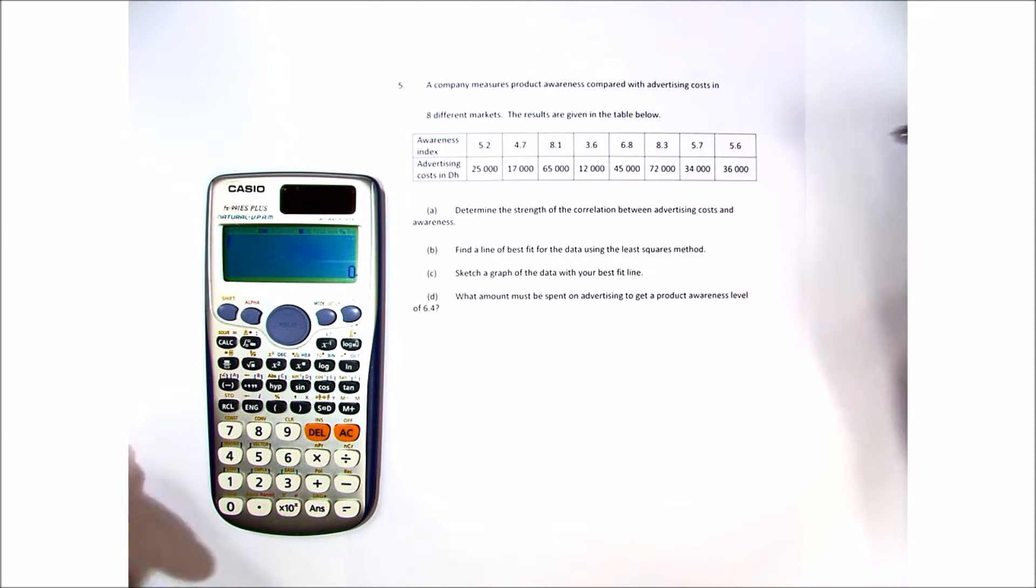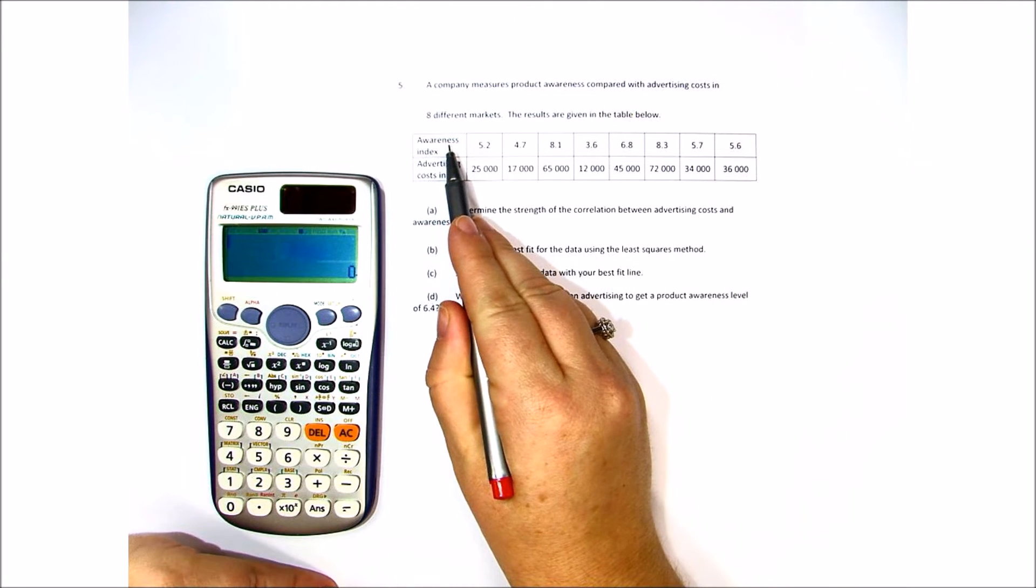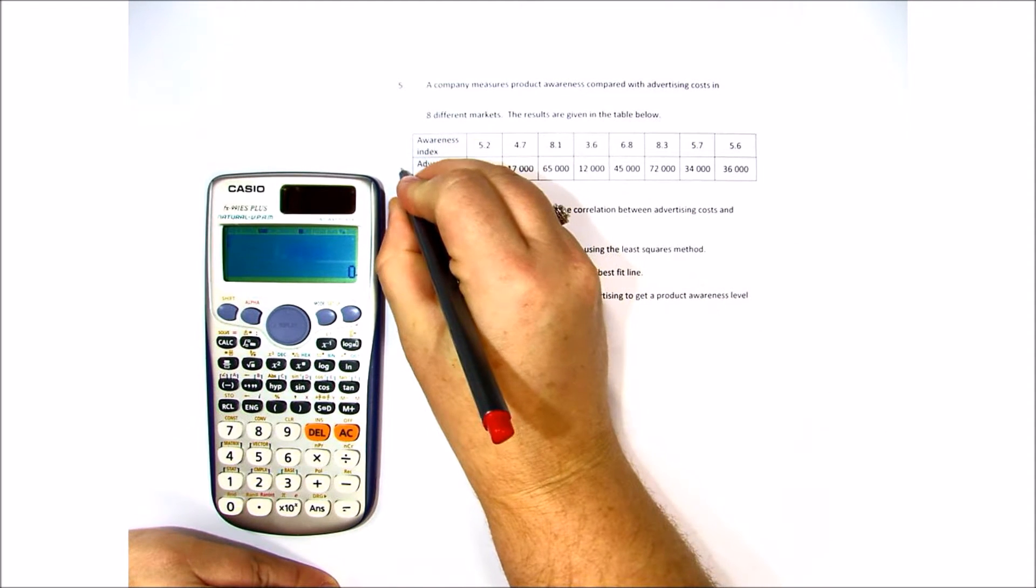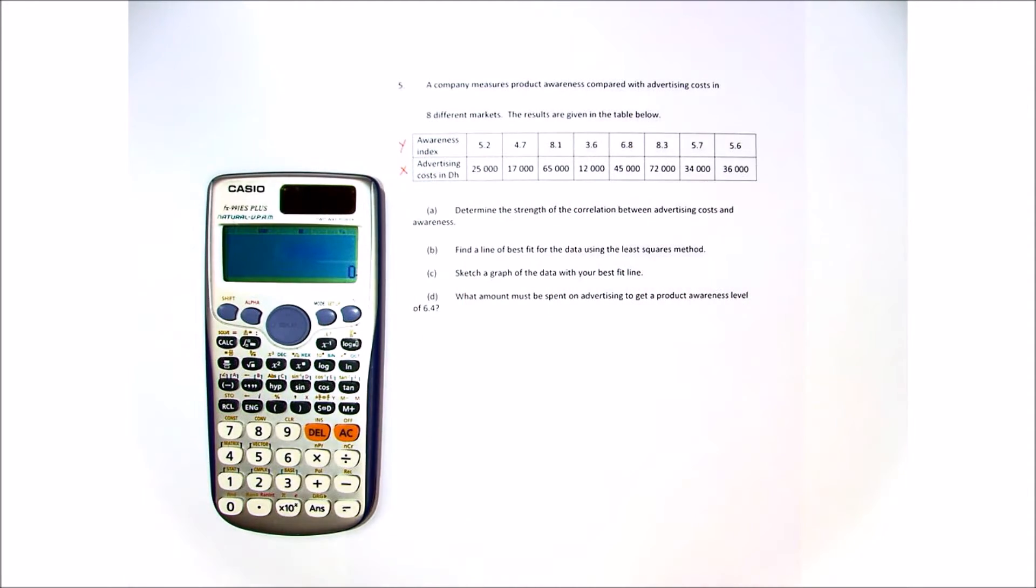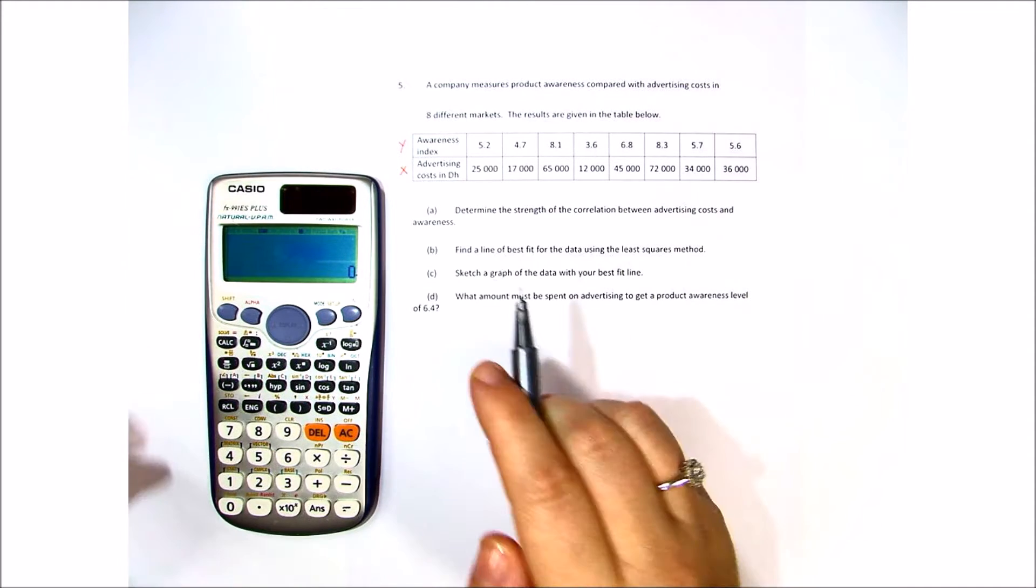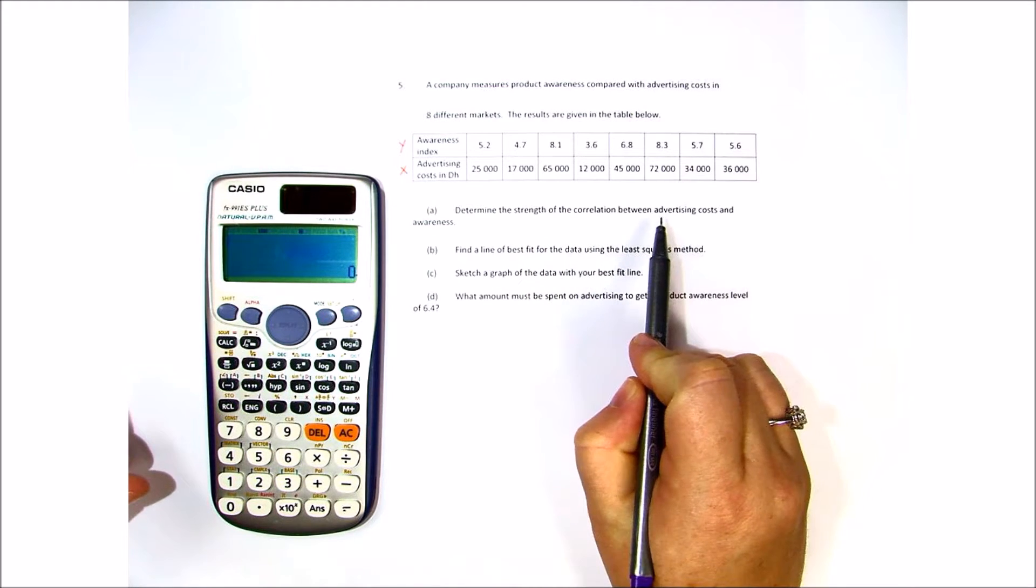Well, if you look, they have to advertise for there to be awareness. So we would put advertising indexes as X and the awareness index as Y. Now the first question says determine the strength of the correlation.